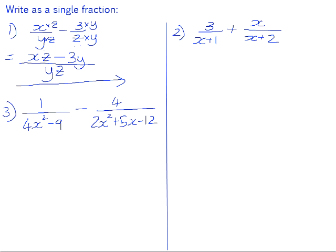Number 2. Same principle applies, except now our denominators are binomials. Exactly the same thing. It's a binomial and a binomial, so our lowest common denominator will be the whole of x plus 1 times the whole of x plus 2.